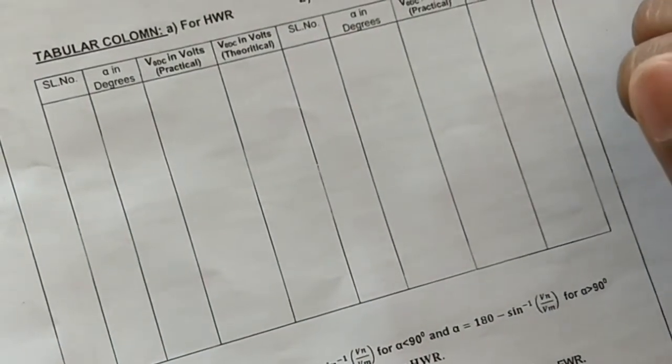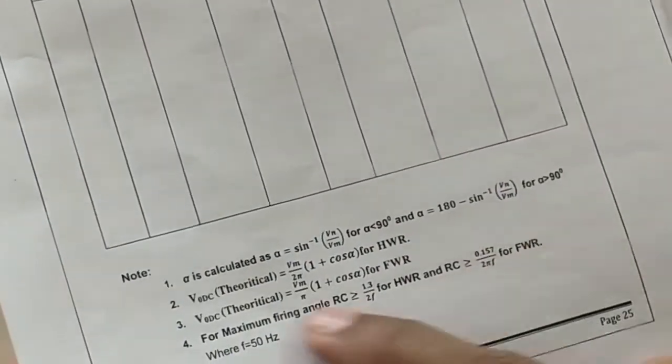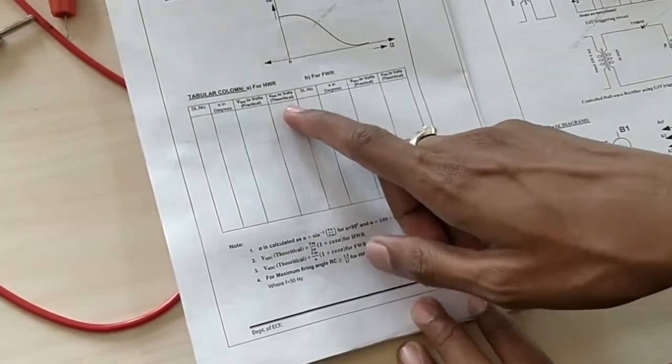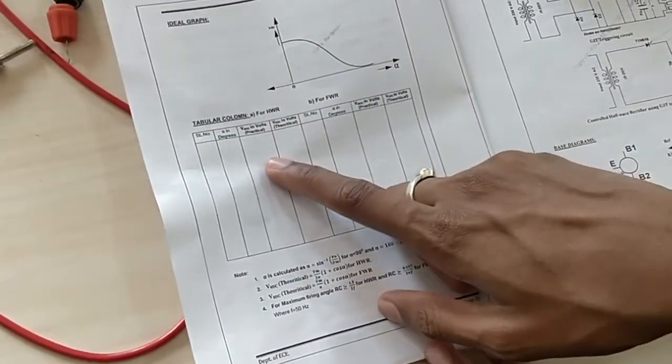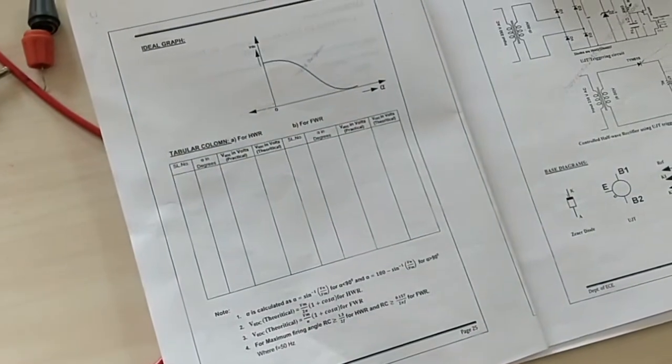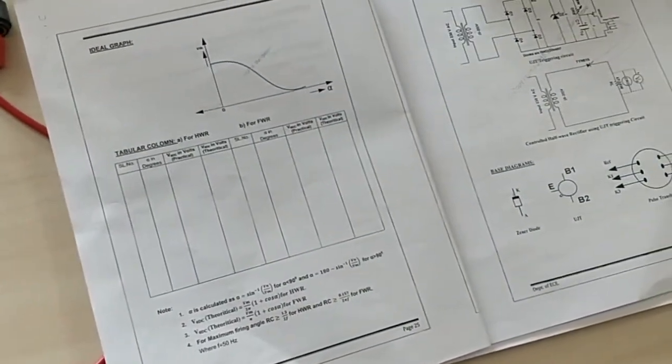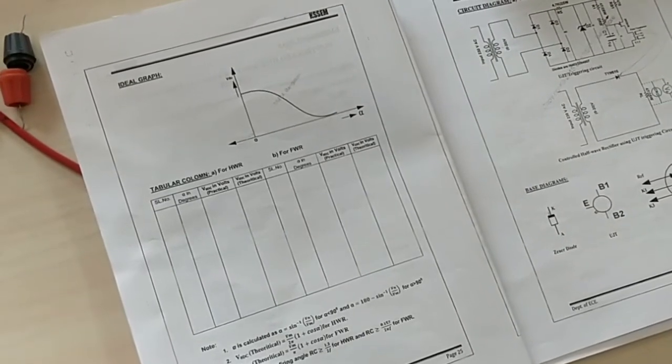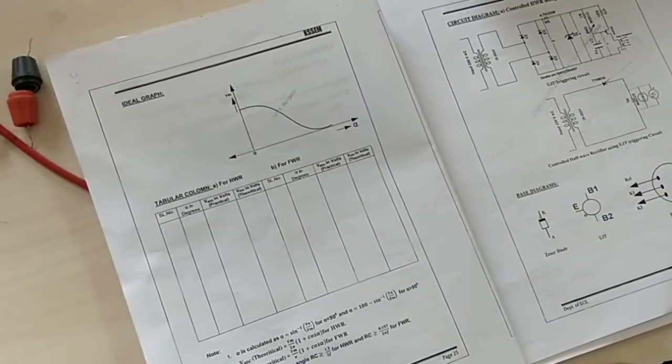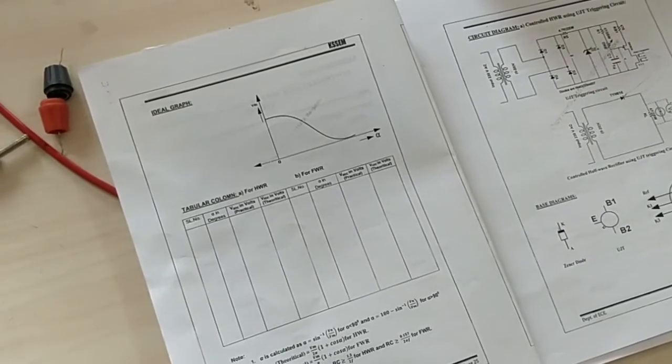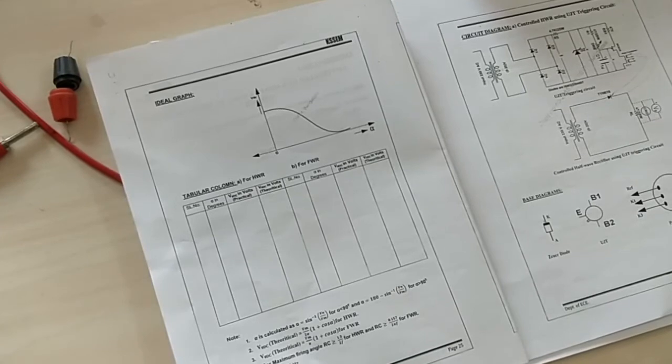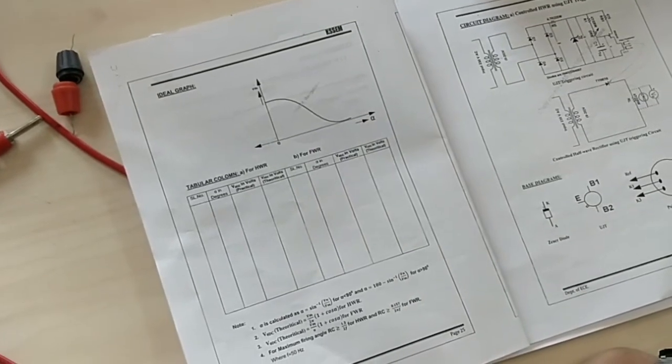This concludes the half wave rectifier. If you can see here below, you have the relevant formula. Just plug in the values and make sure you get values similar to the practical ones. For full wave rectifier, it's the same procedure, only the circuit is different. Instead of half wave DC reference, you get full wave DC reference. The procedure is the same.